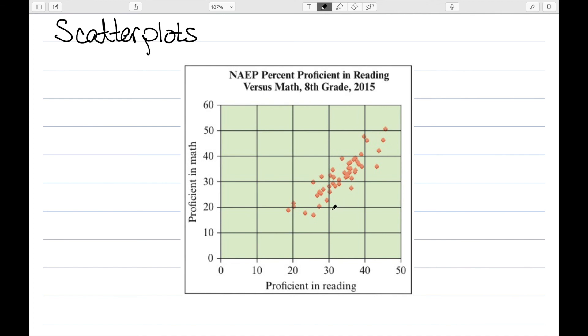Scatter plots are very nice to see how two kinds of data are related. In particular for this, we can see that students that have a higher proficiency in reading also have a higher proficiency in math.